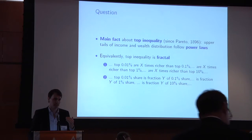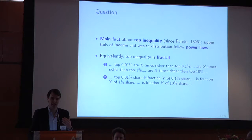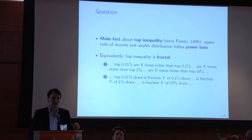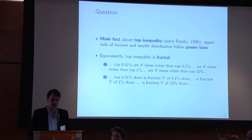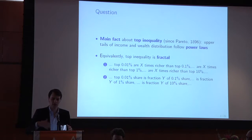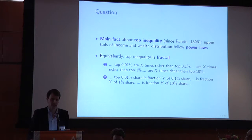Let's take a step back and think about what we know about top inequality. Really one of the main things we know since 1896 is that the upper tails of the income and wealth distribution follow power laws. Another way of saying the same thing is that top inequality is fractal. The top 0.01% are some fixed number X times richer than the top 0.1%, who in turn are X times richer than the top 1%, and so on — where X is a fixed number that doesn't change where you are in the distribution.